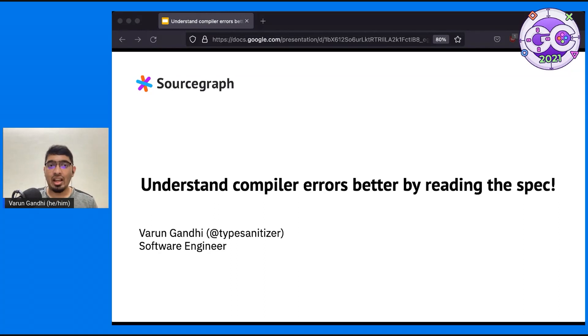Hey everyone, I'm Varun Gandhi. I work as a software engineer at Sourcegraph. I've only been writing Go for about six weeks now after working in C++ for about two and a half years. Given that, the compiler complains about my code quite a bit.